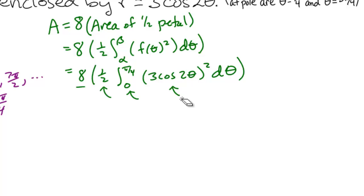we would get 4 times 9 from the 3 squared, the integral from 0 to pi over 4. And now, this is cosine 2 theta squared.